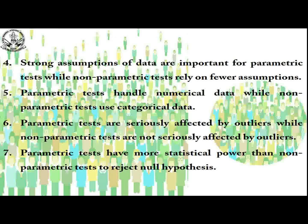So if an outlier is affecting the data, we should not perform a parametric test — a non-parametric test can be taken instead, because it relies on the median only. We also find that parametric tests have more statistical power than non-parametric tests to reject the null hypothesis, which means to accept the alternative hypothesis.